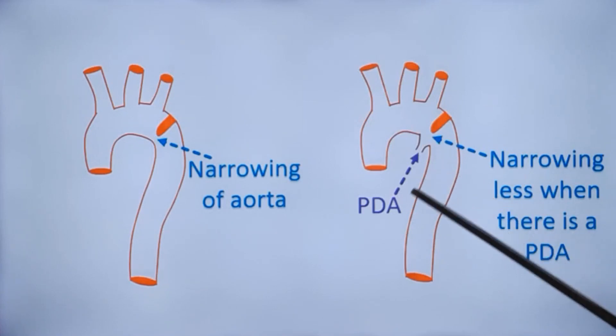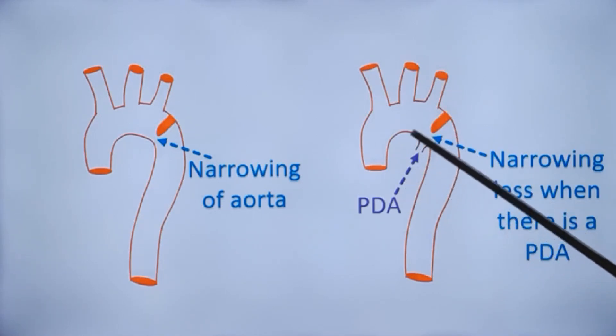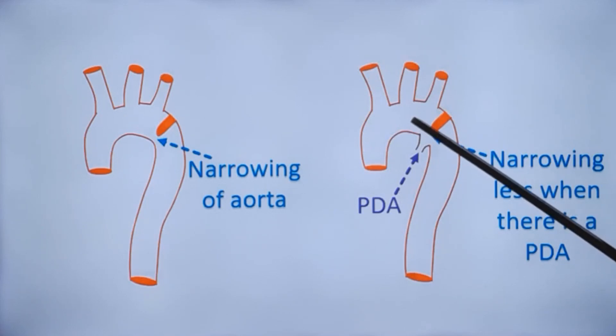PDA can be easily diagnosed. The continuous murmur, the higher volume of pulse, and on echo the jet will be easily visible because this region is at a high pressure and pulmonary artery pressures are low. Definitely you will see the PDA jet. Coarctation is what can be missed when there is an associated PDA.